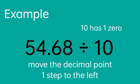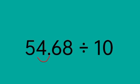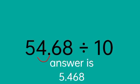10 has 1 zero, so we will just move the decimal point one step to the left. By moving one step to the left, we will get the answer 5.468, read as 5 and 468 thousandths.